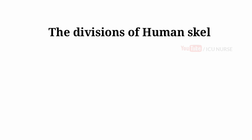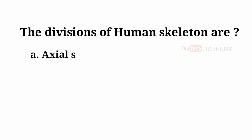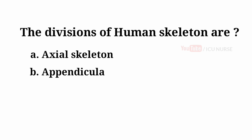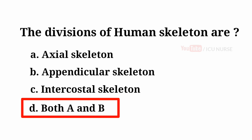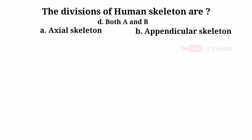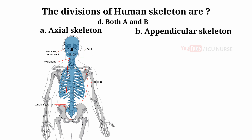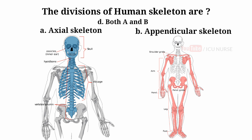The divisions of human skeleton are: A. Axial skeleton, B. Appendicular skeleton, C. Intercostal skeleton, D. Both A and B. And the answer is D. Both A and B. The divisions of the human skeleton are the axial skeleton and the appendicular skeleton — the two major divisions.